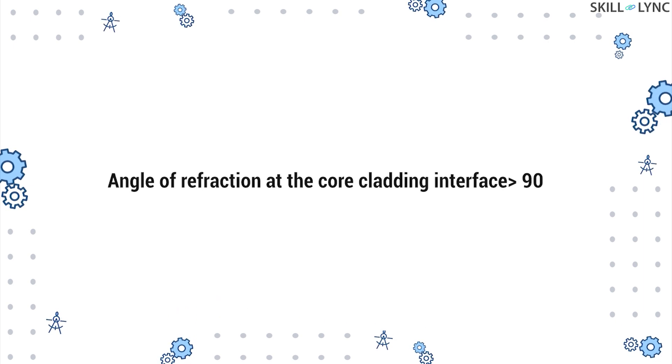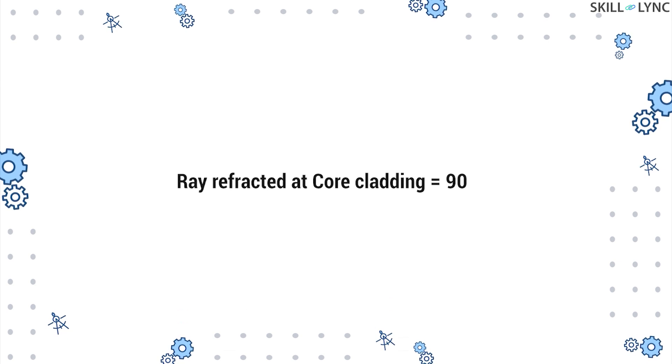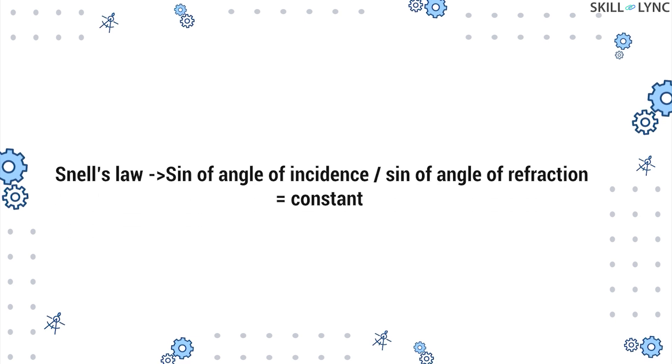We just learned that the angle of refraction at the core-cladding interface should be greater than 90 degrees for total internal reflection to take place. So we will consider that the ray is refracted at an angle of 90 degrees. Now according to Snell's law, the ratio of the sine of the angle of incidence to the sine of the angle of refraction is a constant.